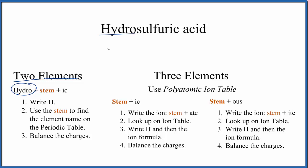First we write H, and then we look at sulfuric. We go to the periodic table looking for sulfur, which is S. When we have hydro, we'll just have two elements, like HCl for hydrochloric acid. So we have HS.